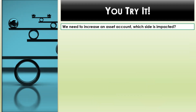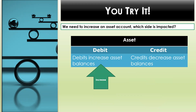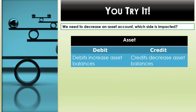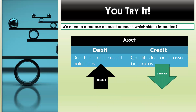Got it? How about you try it? We need to increase an asset account — which side is impacted? Debits increase asset balances, while credits decrease asset balances. So if we need to increase an asset account, we will debit the asset account. Let's try another one. We need to decrease an asset account — which side is impacted? We know that debits increase the account, so credits decrease asset balances. So if we need to decrease an asset account, we will credit the asset account.